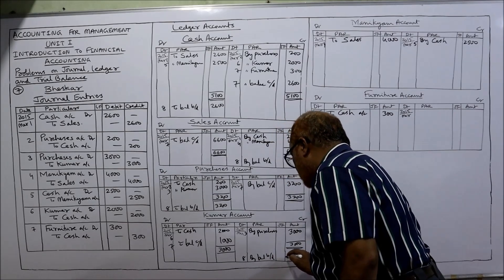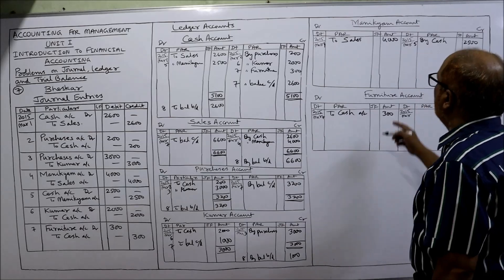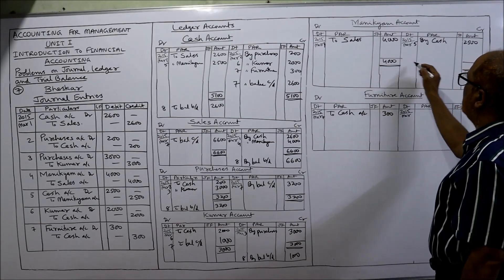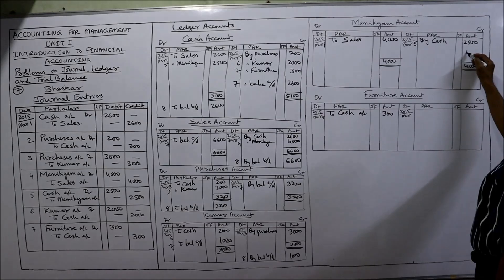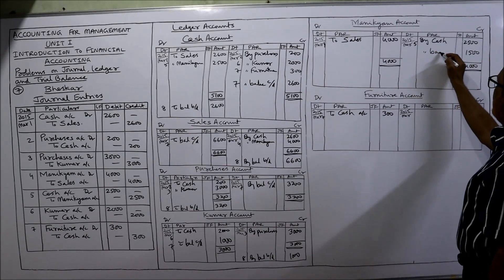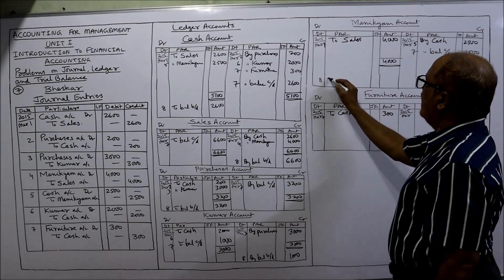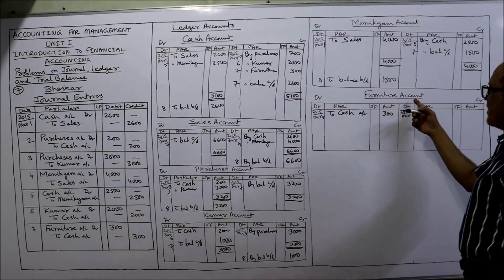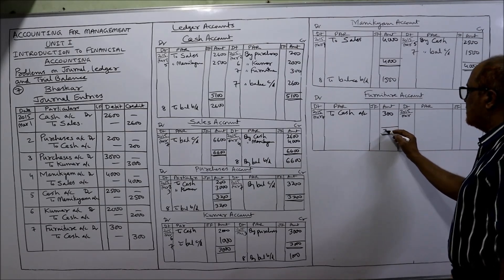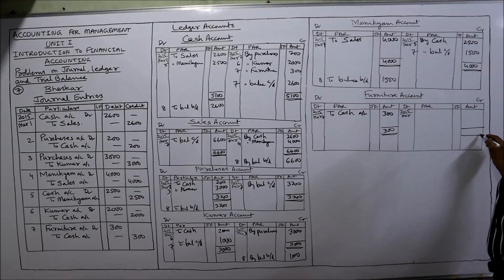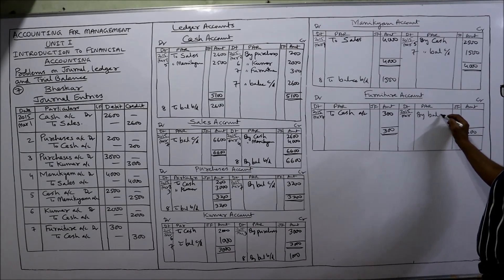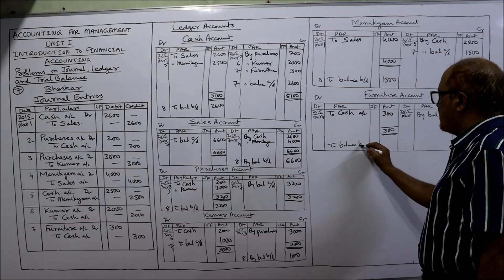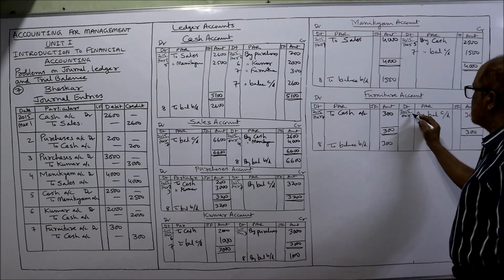Moneycam account: debit side is 4000, minus 2500 — balance is 1500. 'By balance carried down', date 7th. Next date 8th: 'To balance brought down — 1500.' Furniture account: debit side is 300, nothing on credit side. 'By balance carried down — 300', date 7th. Next date 8th: 'To balance brought down — 300.'